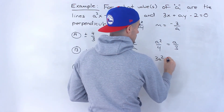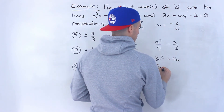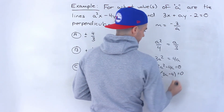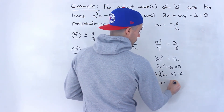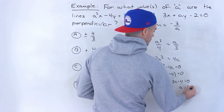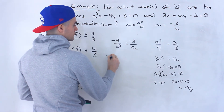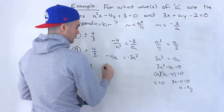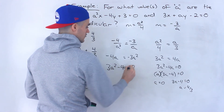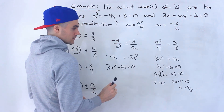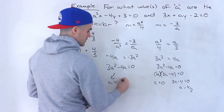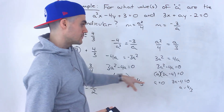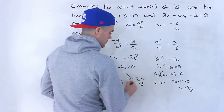When we cross multiply, we get 3A squared equals 4A, which gives us 3A squared minus 4A equals 0. We can factor: A times (3A minus 4) equals 0. So A equals 0, or 3A minus 4 equals 0, which means A equals 4 over 3. Both methods of flipping and setting equal give the same solutions: A equals 0 and A equals 4 over 3.